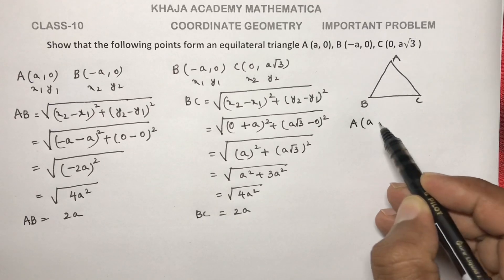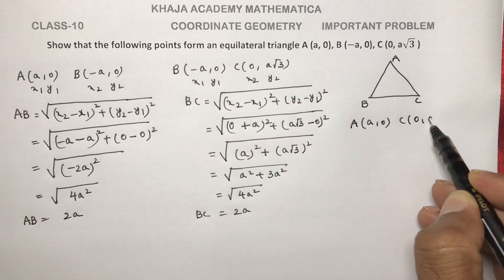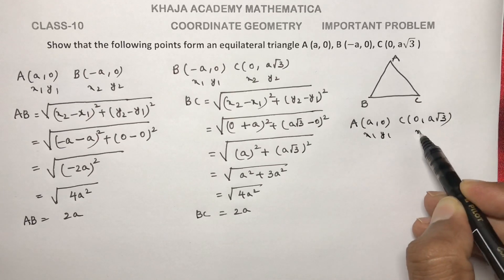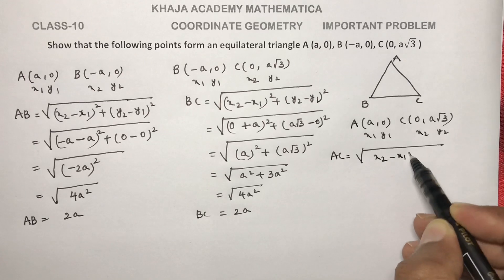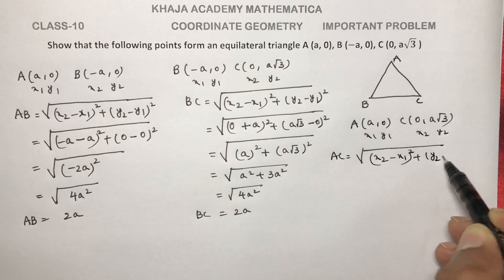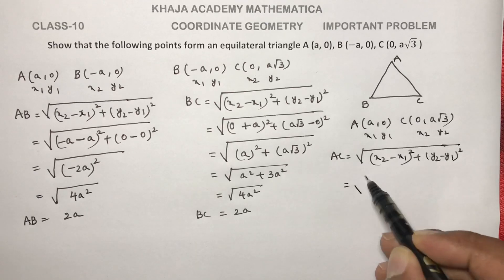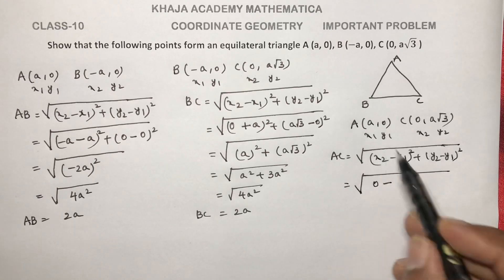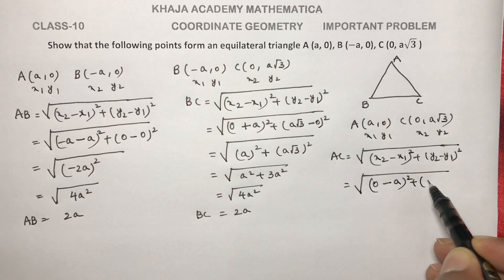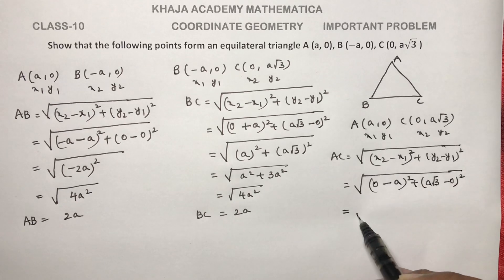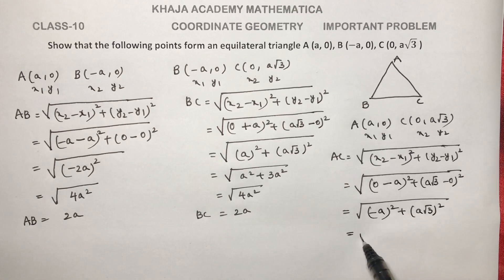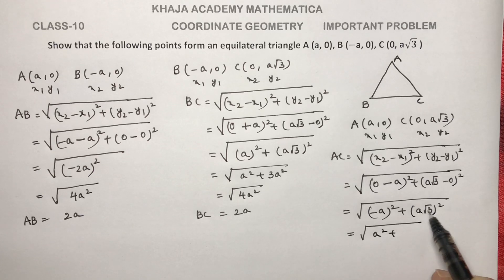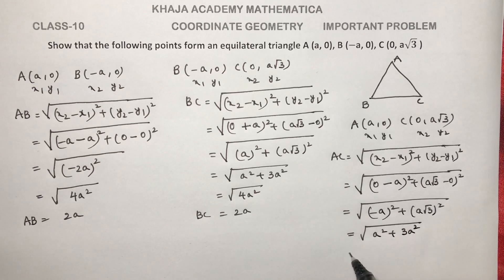Now find AC distance. A is (a, 0) and C is (0, a√3), so x1, y1, x2, y2. AC distance formula: under root of (x2 - x1) whole square plus (y2 - y1) whole square. Here, (0 - a) whole square plus (a√3 - 0) whole square equals a square plus 3a square, giving 4a square.